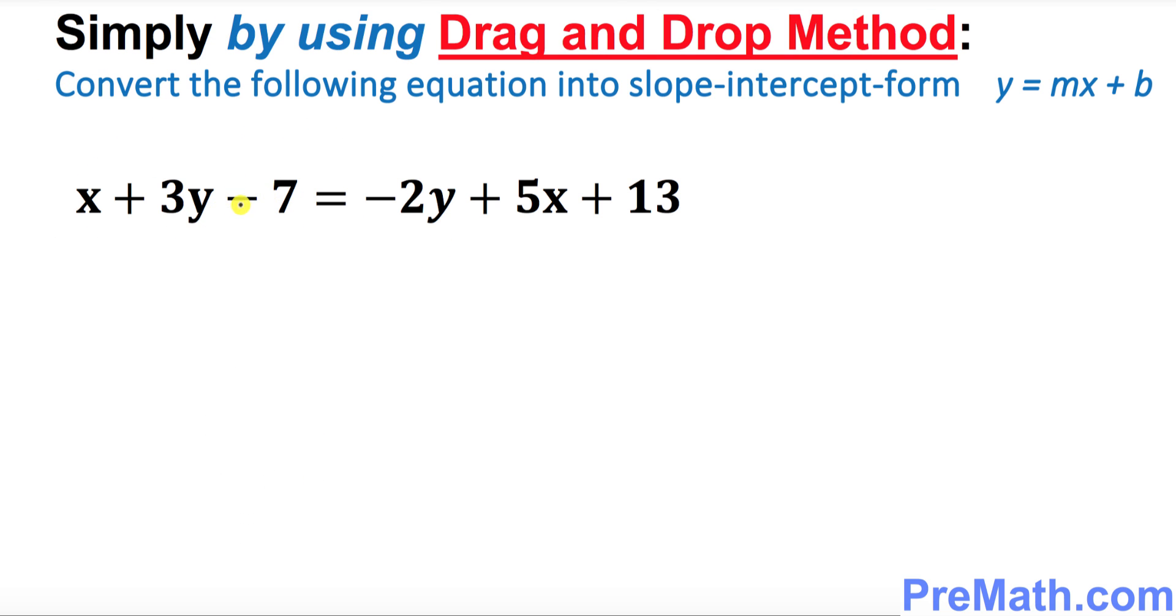In this final example we are asked to convert this equation into slope-intercept form. That means we want to put it in y = mx + b form. So what we're gonna do is first of all move all y's on the left-hand side. This -2y should go on the left-hand side, and all these x's and constants are gonna move on the right-hand side.